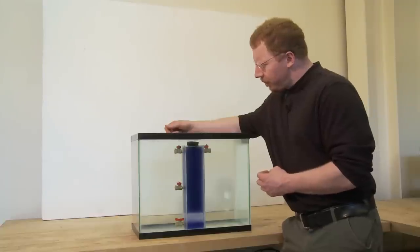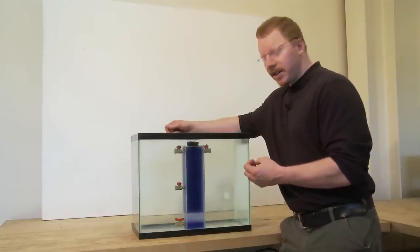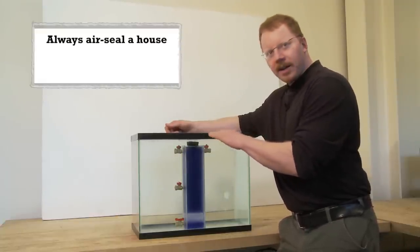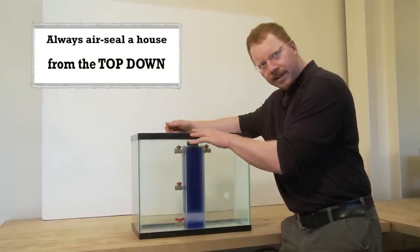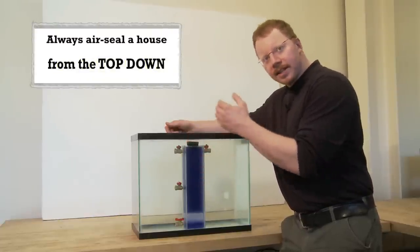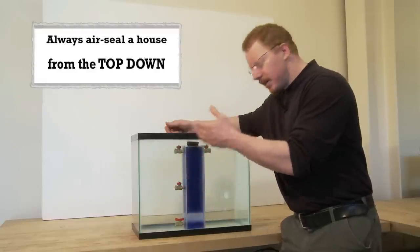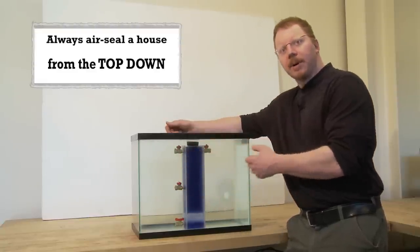This is a very important point. In order to most safely air seal a house, it's always better to air seal from the top down. If you close the holes off at the top, you will reduce that incentive to cause backdrafting of appliances and to have air leakage come in from the bottom.